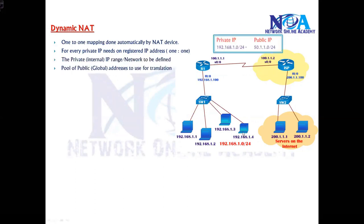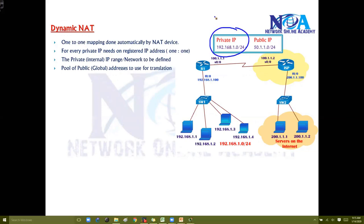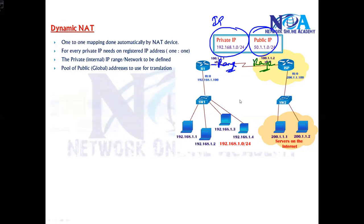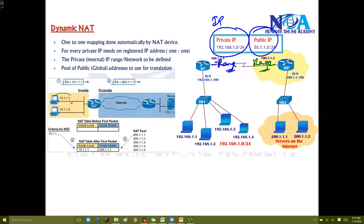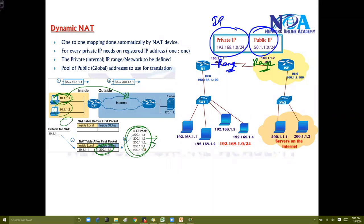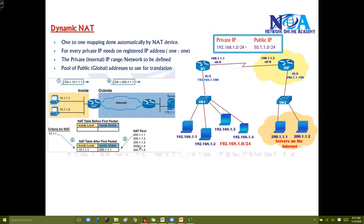To configure dynamic NAT, you tell the device the range of private IPs using ACLs, and you also define the range of public IPs — called a pool. The device then automatically performs the mapping. For example, a host with 10.1.1.1 goes outside and automatically gets mapped with one public IP from the pool. The second user may use the second public IP, the third uses the third, or it may be random — the device decides which private IP uses which public IP.